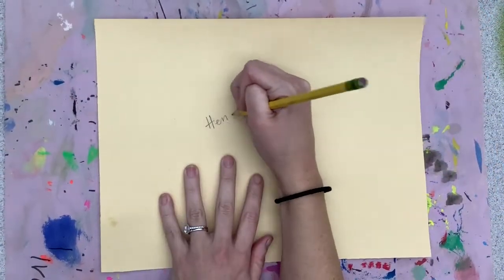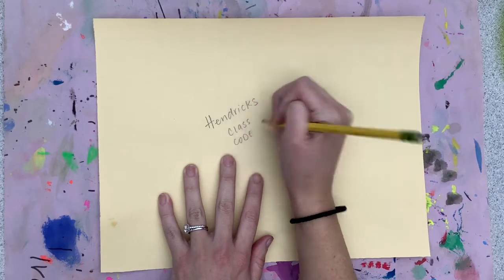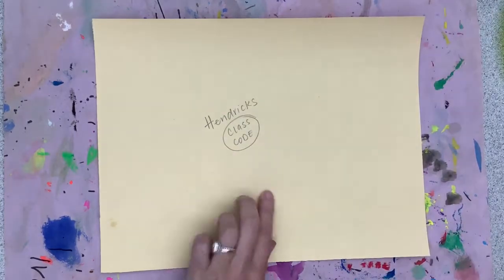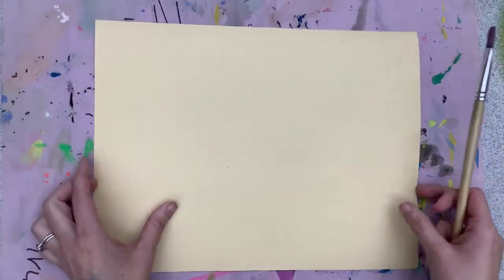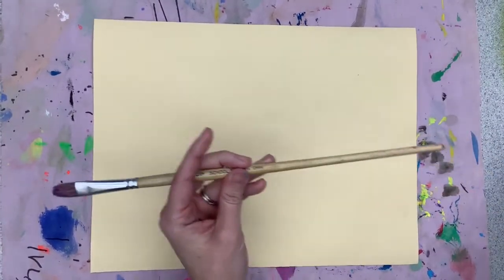Today we're going to be doing some painted papers. You're gonna write your name and class code on the back, put your pencil away, and then we are going to use a paintbrush. You will have a plate of paints at your table.